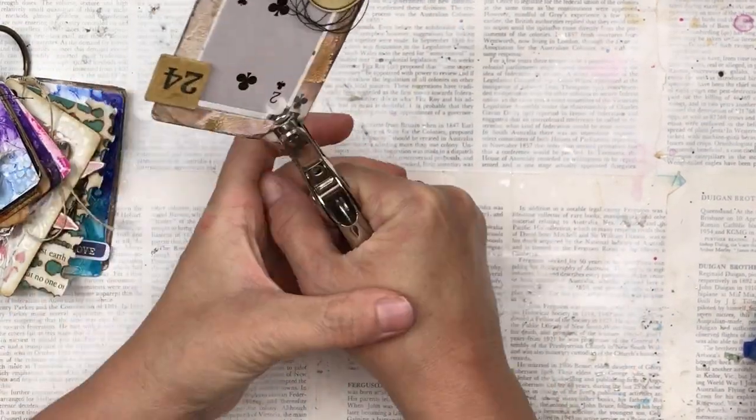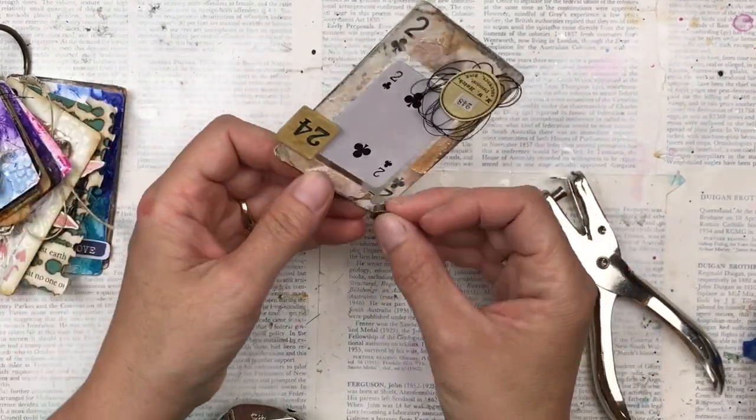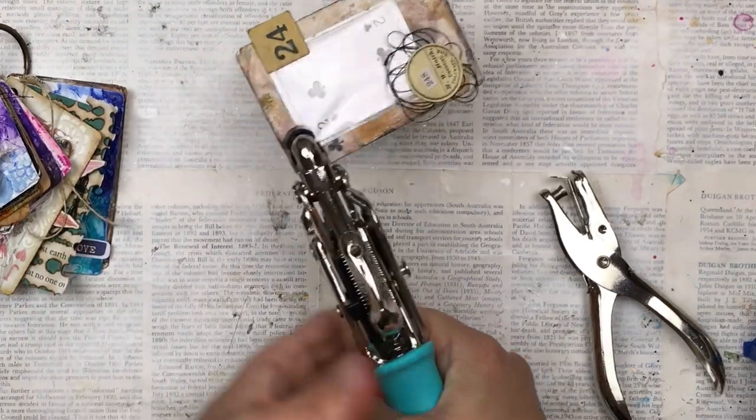I'm punching a hole so I can add it to the rest of my collection. Because the hole is punched very close to the cellophane and I don't want it to tear, I'm adding an eyelet to secure it.